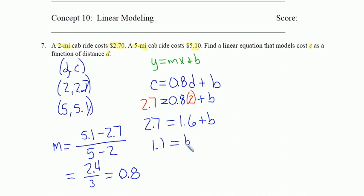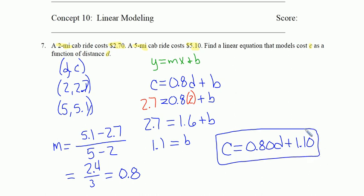So I'm supposed to model this cost. Cost is equal to 0.80 times d, times the number of miles I go, plus 1.10. Here's my function that models the cost of a cab, right? It costs $1.10 to get in the cab, and it's 80 cents a mile. Boy, I wish it was that cheap nowadays.